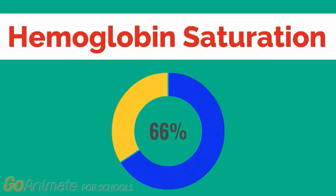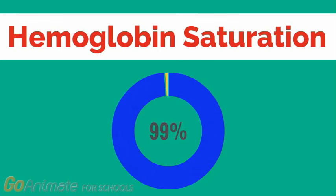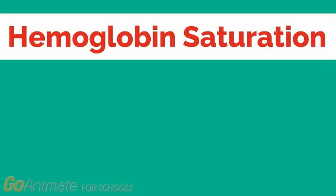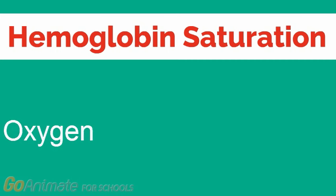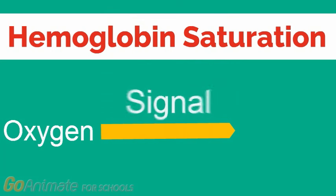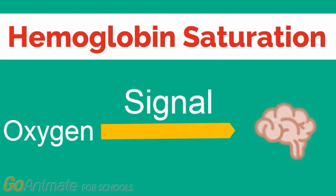Normal oxygen saturation level is between 95 to 99%. Oxygen saturation level has to be very high in order to meet the body's demands for oxygen. Therefore, even 93% saturation indicates to your body that you do not have enough oxygen. This decreased oxygen level is detected by many receptors in the body which then send a signal to the brain, causing the shortness of breath.